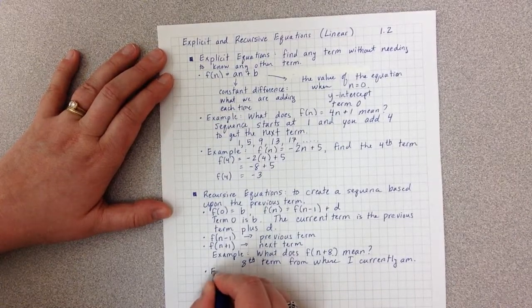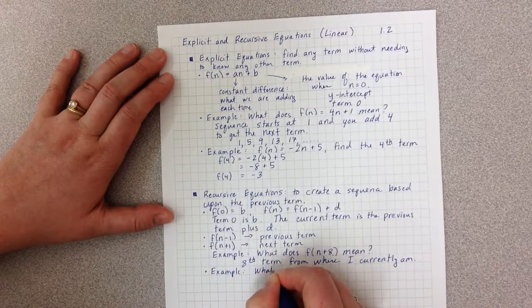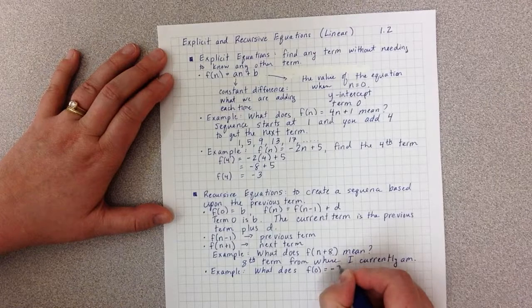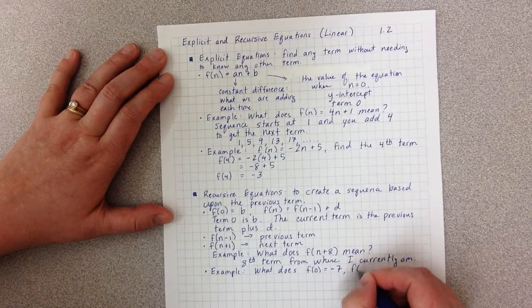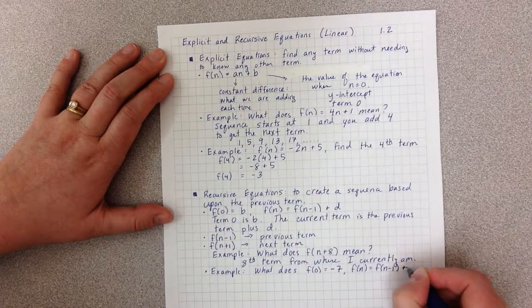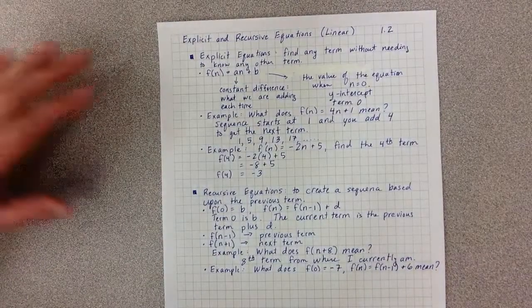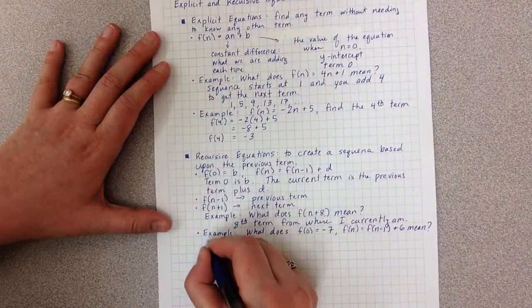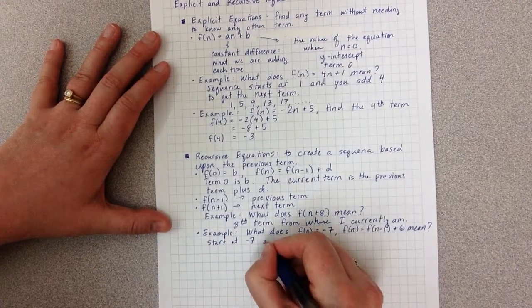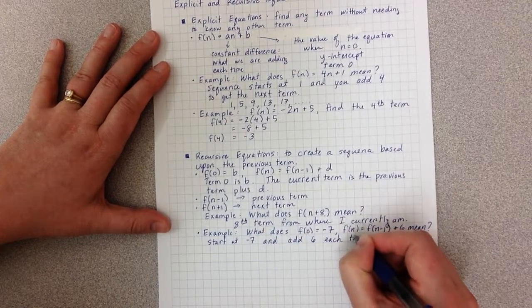Let's look at an example. What does f(0) equals negative 7, f(n) equals f(n minus 1) plus 6 mean?